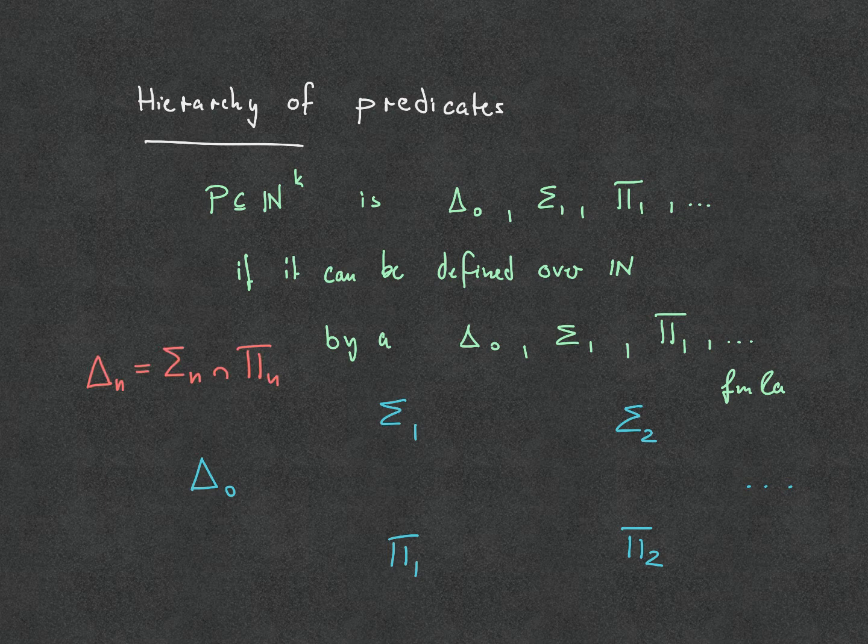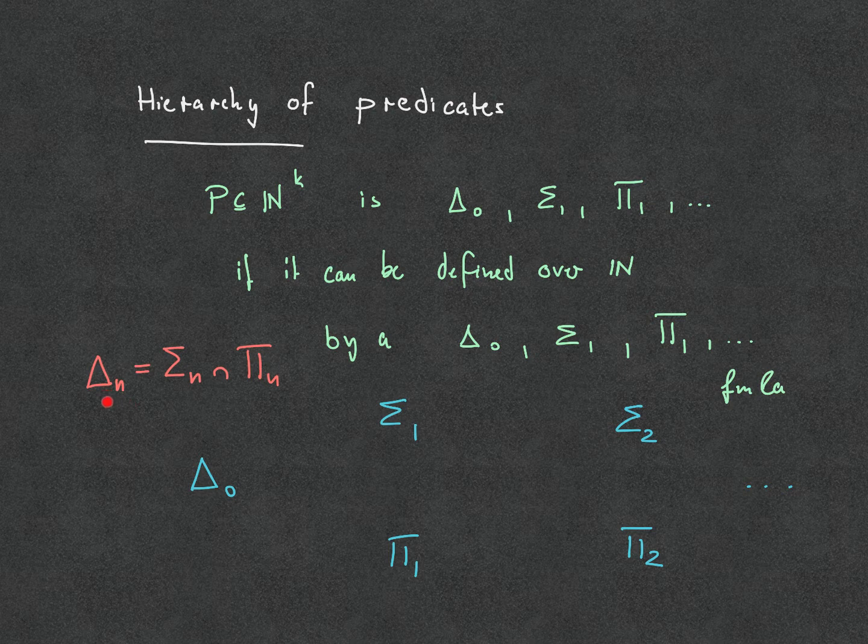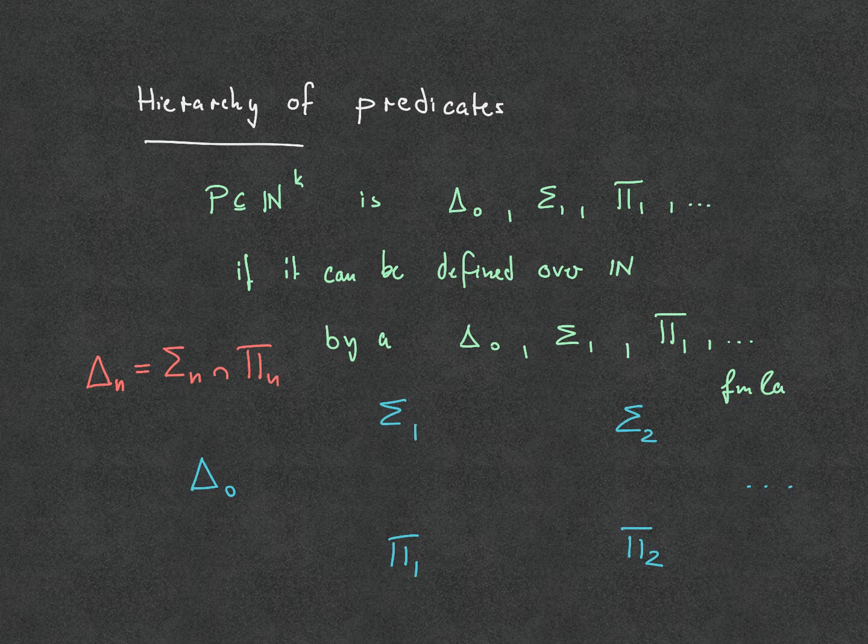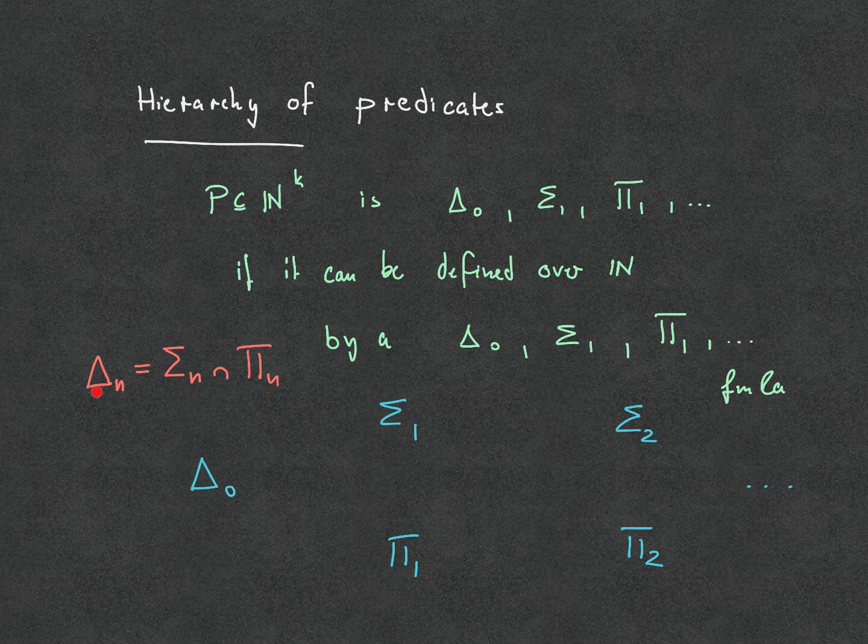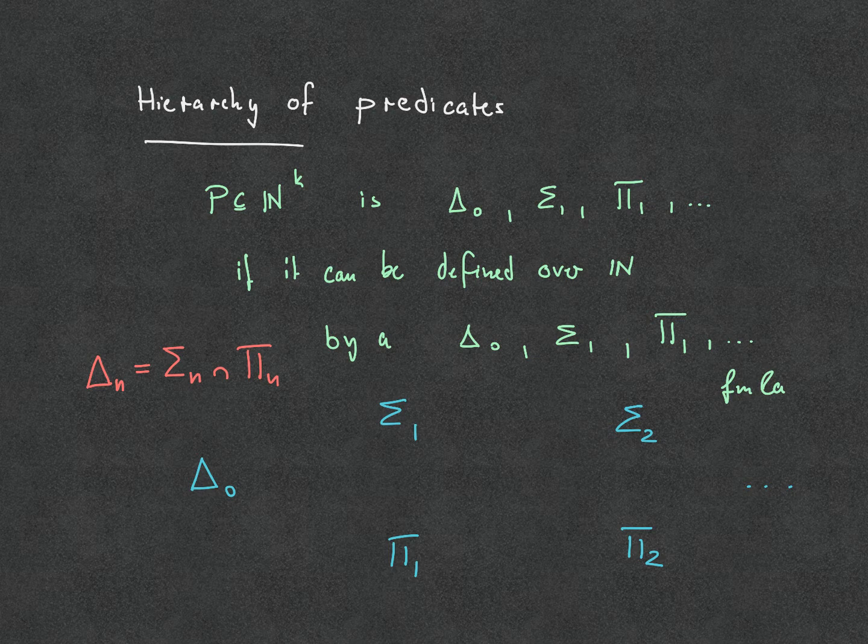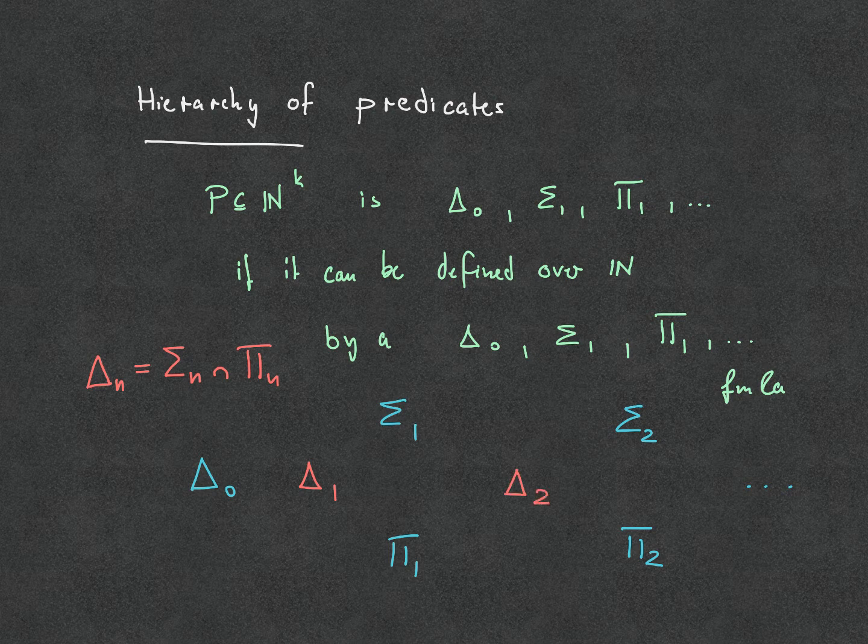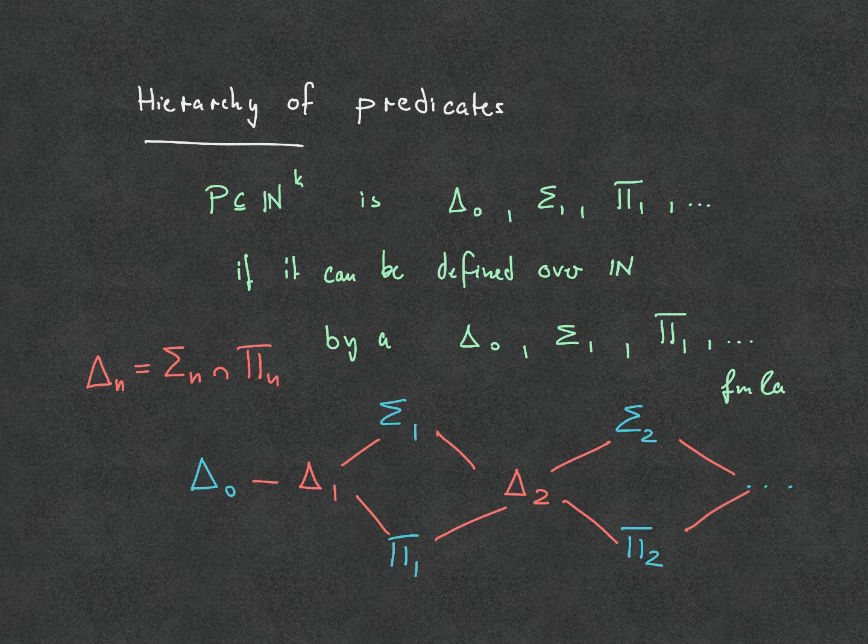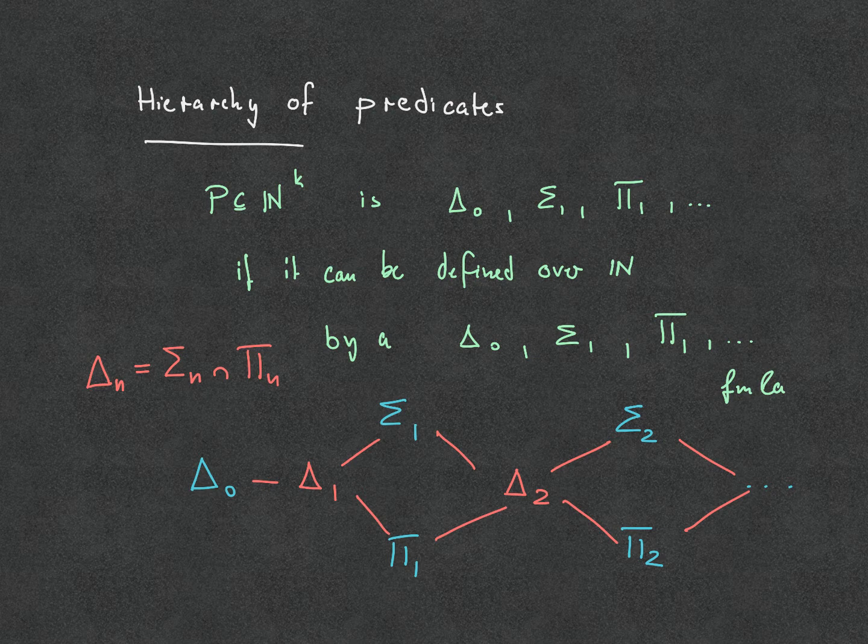So in the case of predicates, we can furthermore do something that we cannot really do with formulas. Namely, we can form the class delta-n, which is the intersection of the sigma-n predicates and the pi-n predicates. So any predicate that can be defined by a sigma-n formula and a pi-n formula is delta-n. And that gives us another kind of intermediate level in this hierarchy here. But keep in mind, this works only for predicates, not for formulas. There is no notion or concept of a delta-1 formula.